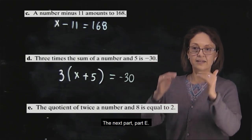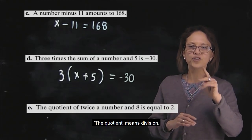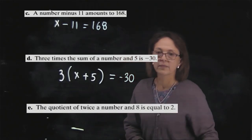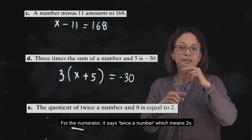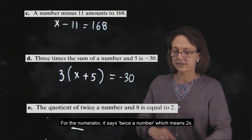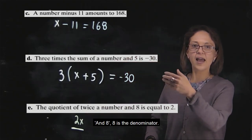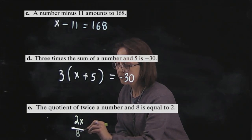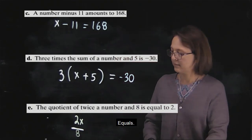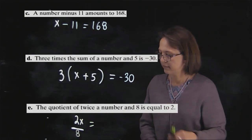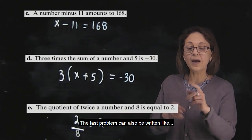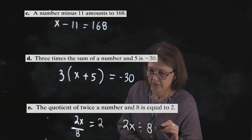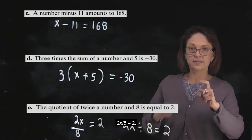Next, E. The quotient means division. The numerator says twice a number means 2x, and 8 is the denominator. Equals 2. The last one can also be written like 2x divide by 8 equals 2.